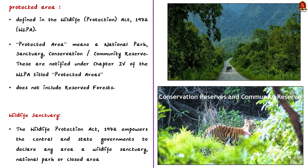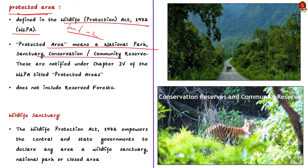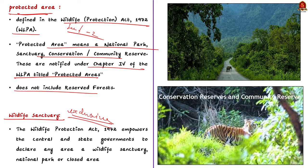Our next topic is different types of protected areas. Under the Wildlife Protection Act of 1972, Section 2, a 'protected area' means a national park, sanctuary, conservation reserve, or community reserve notified under Chapter 4 of the Act — it does not include reserved forests. A wildlife sanctuary is reserved exclusively for wildlife use including animals, reptiles, insects, and birds — especially species in danger of extinction. The Wildlife Protection Act 1972 empowers both central and state governments to declare any area a wildlife sanctuary, national park, or closed area.